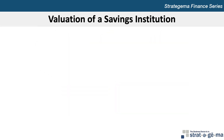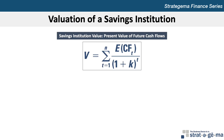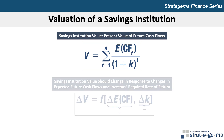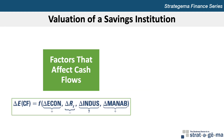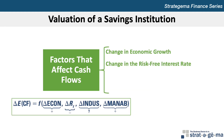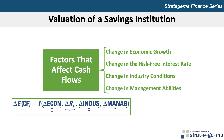The value of a savings institution can be modeled as the present value of its future cash flows, just like a commercial bank. The value should change in response to changes in expected future cash flows and in the rate of return required by investors. The change in an SI's expected cash flows is a function of changes in economic growth, the risk-free interest rate, industry conditions such as regulations, and the abilities of the SI's management.